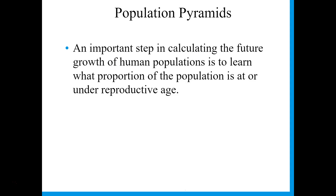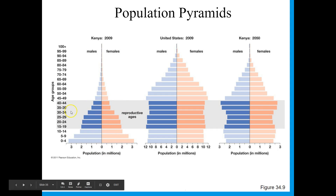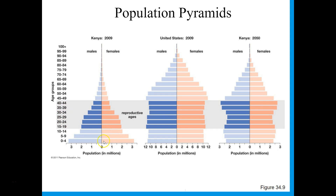The next tool that ecologists can use to understand human populations are population pyramids. These help us think about the future growth of human populations by showing what proportion of the population is under the reproductive age. Here is the reproductive age, broadly from 15 to 44, showing the number of people under the reproductive age in Kenya in 2009, which is a pretty large group. Whereas in the United States, there were more people of reproductive age than under it.